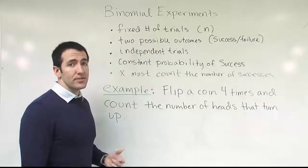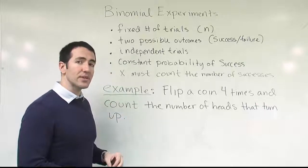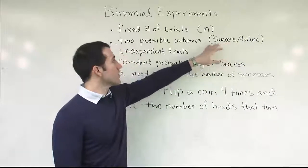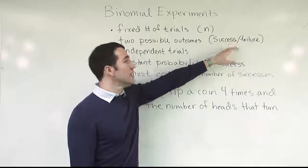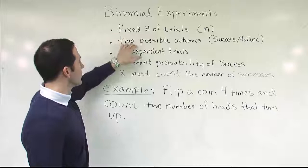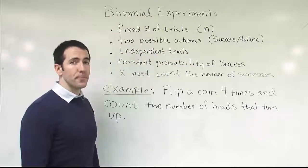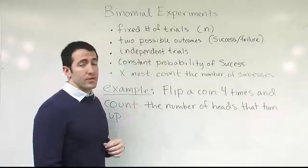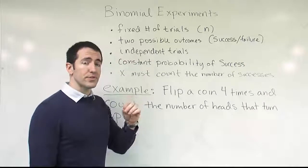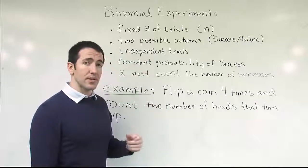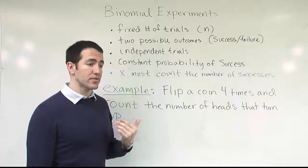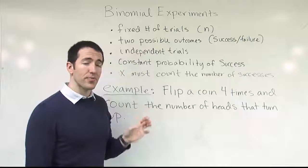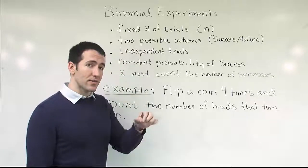The second principle is two possible outcomes for each trial. When we take guesses on those 10 questions, each question is either going to be correct or incorrect. We can broadly categorize the two possible outcomes as success or failure — that's required in a binomial experiment. The word 'bi' indicates two possible outcomes; only two ways it can turn out. Sometimes when an experiment isn't naturally binomial, you can convert it. For example, if there are four answer choices per question, instead of tracking A, B, C, or D, classify the result as either correct or incorrect, and you've turned it into binomial.